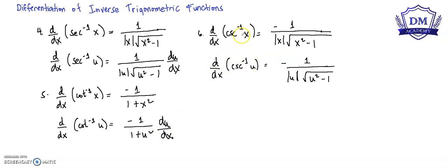Last, the derivative of the inverse cosecant of x is equal to negative 1 all over the absolute value of x times the square root of x squared minus 1. And for the chain rule counterpart, the derivative is equal to negative 1 all over the absolute value of u times the square root of u squared minus 1, times the derivative of u with respect to x. To understand more, let's have a sample problem.